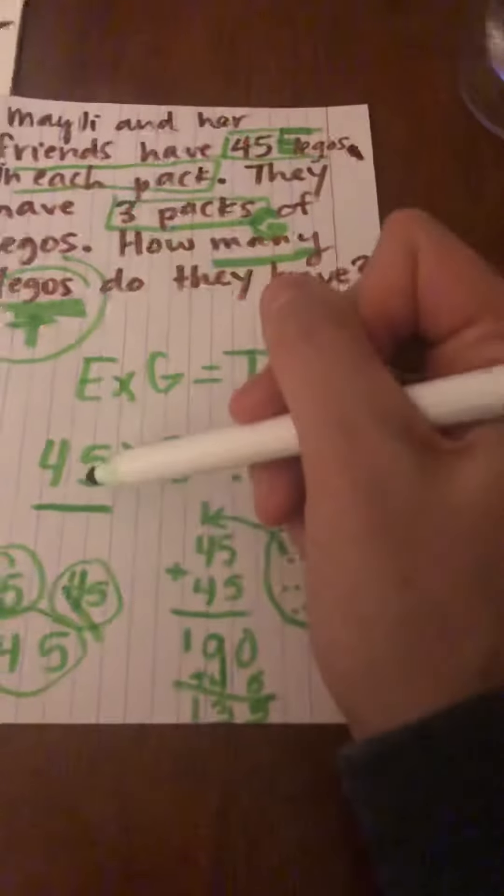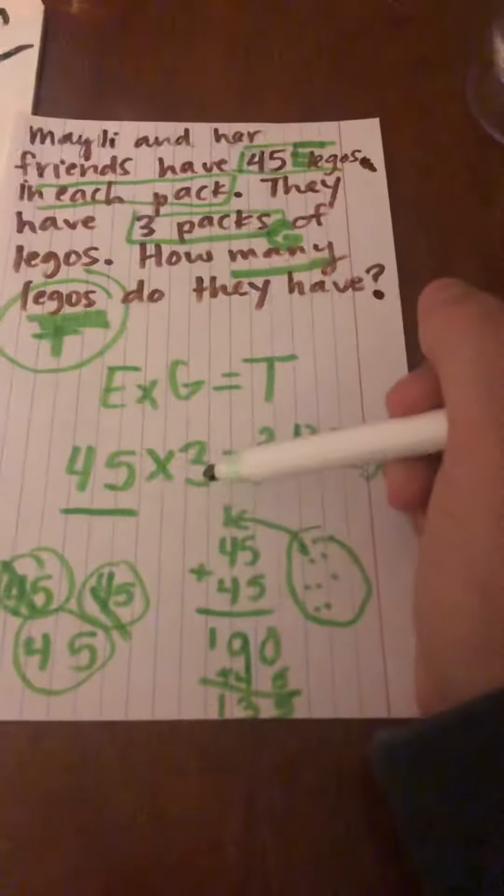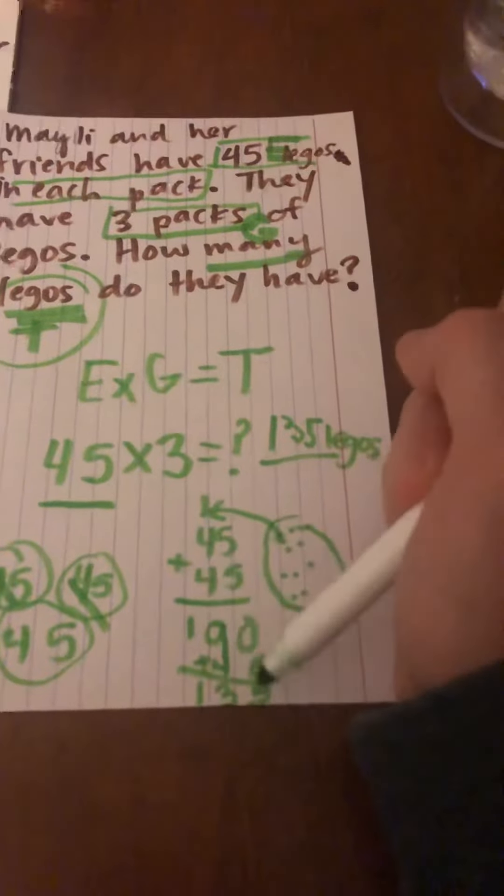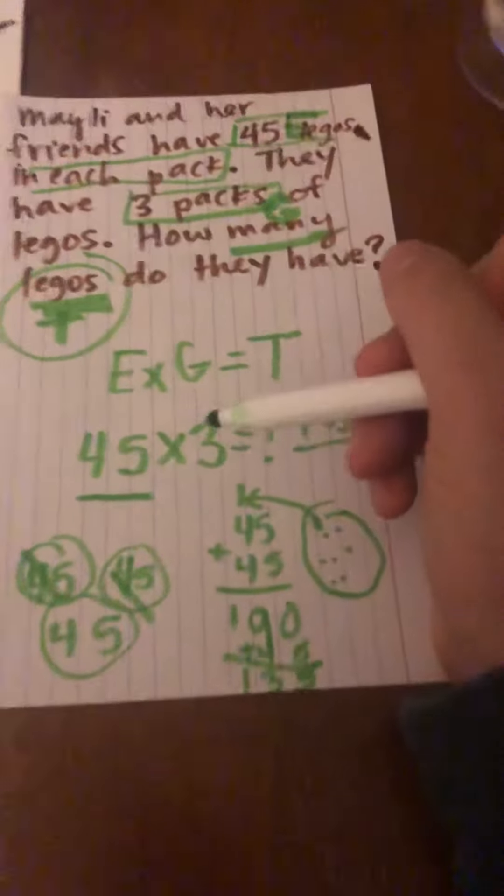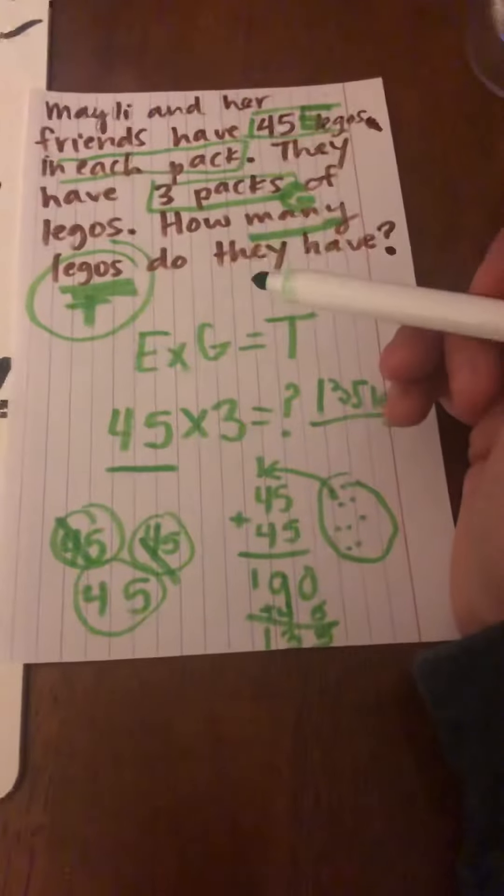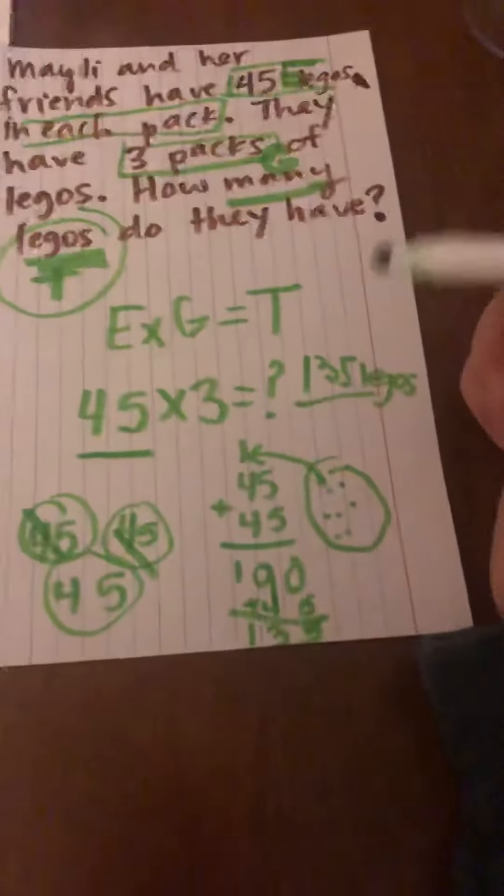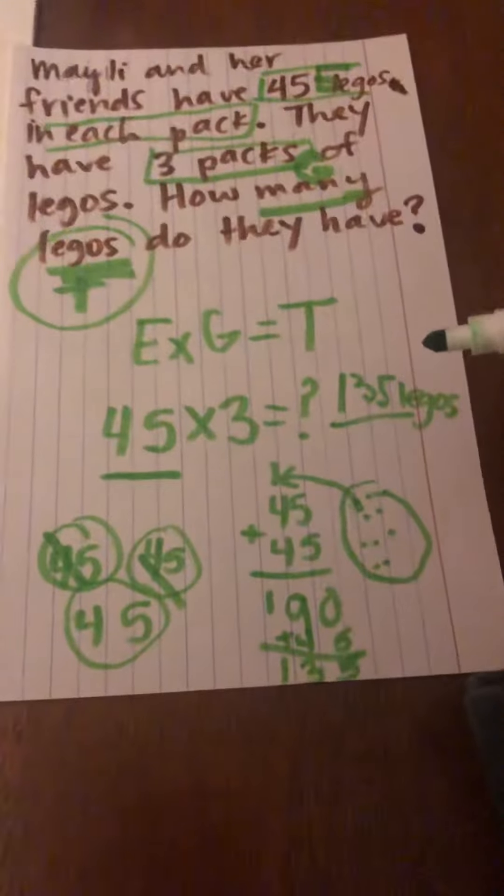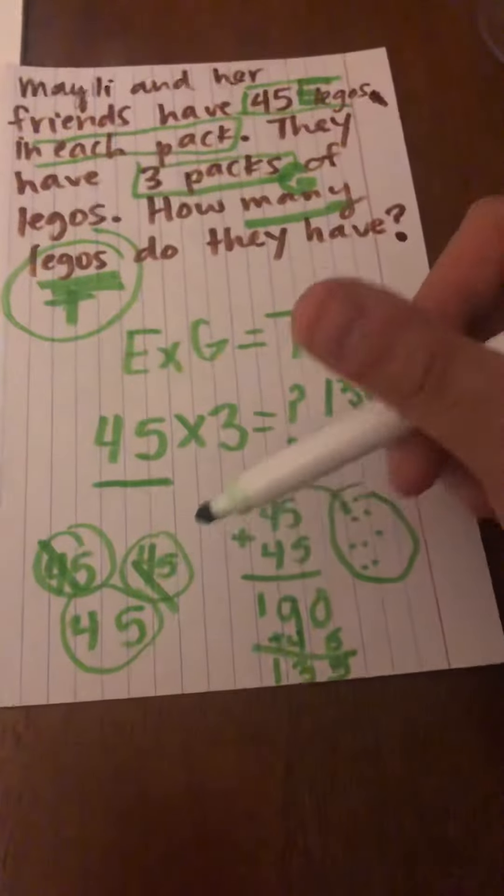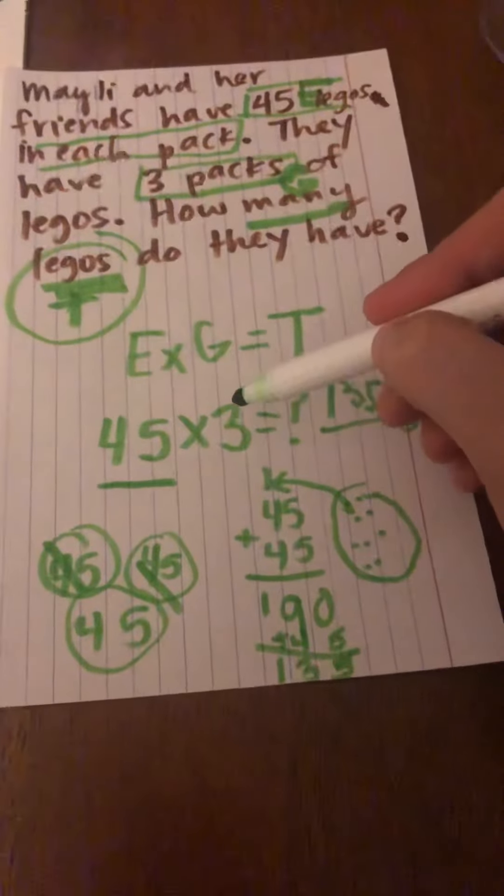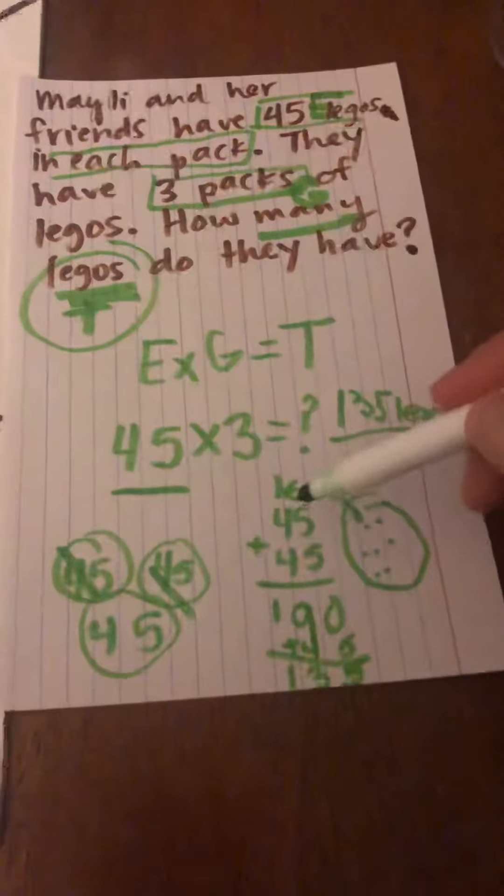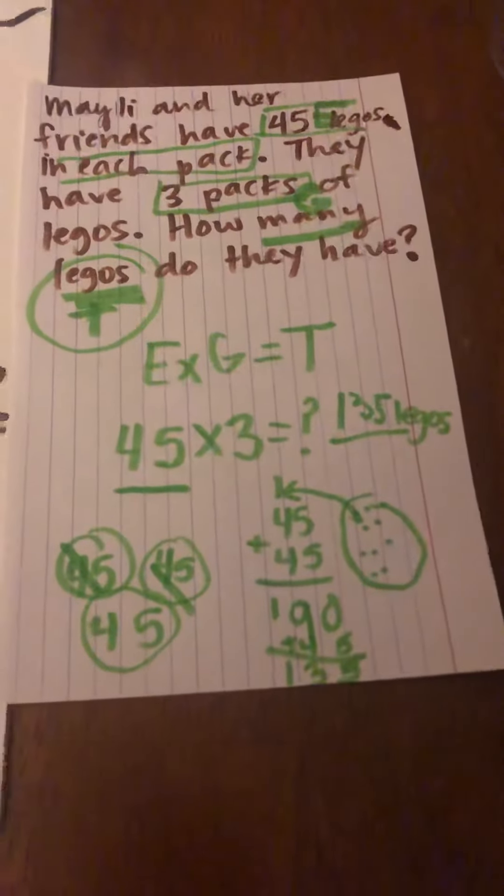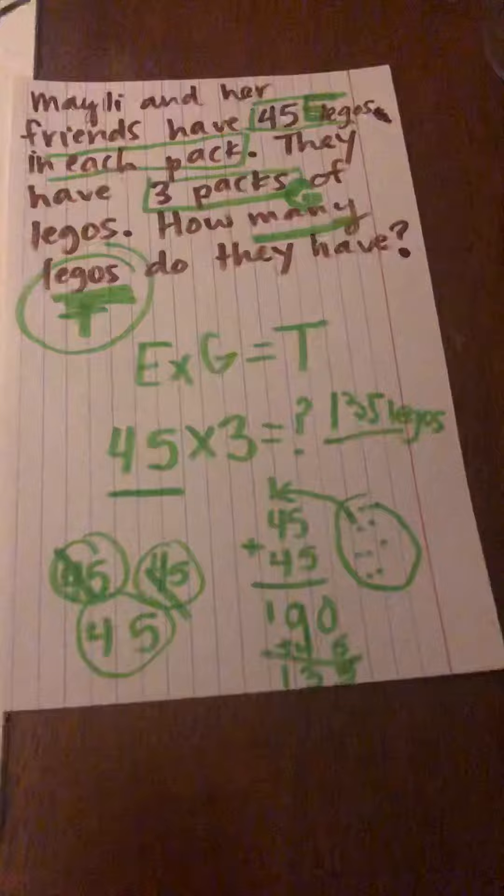When we have bigger numbers, we need to stack and add to multiply by repeated addition. When our numbers are smaller, like the ones you'll see in the assignment today, you can just skip count by the number that many times to get to your answer. If your numbers are too big or too tricky to skip count by, go ahead and stack and add to find your solution. Repeated addition is the same as multiplication. Good luck!